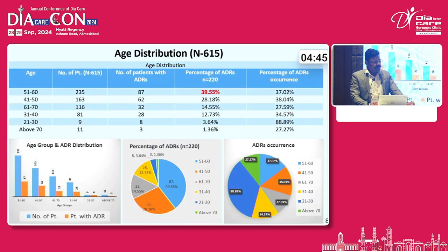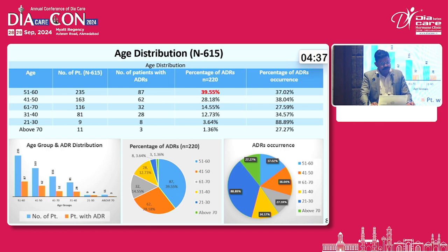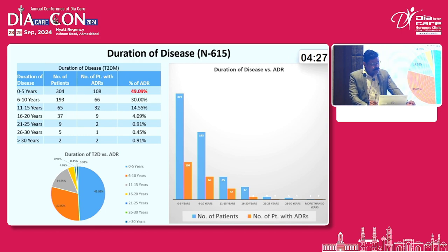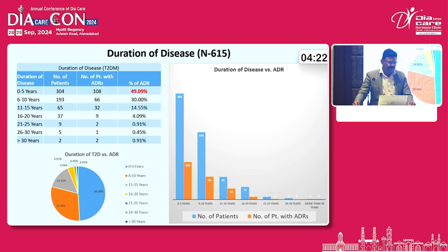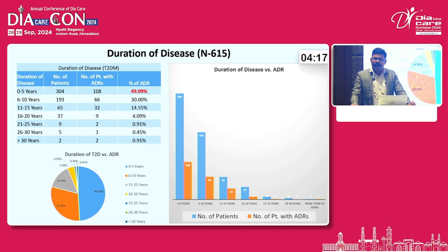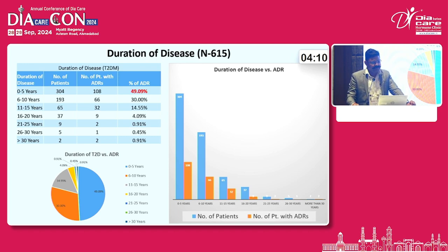With respect to age distribution, the most ADRs occurred in the subgroup of 51 to 60 years of age, with a percentage of ADR occurrence of 37.02%, followed by the subgroups 41 to 50 and 61 to 70. Regarding duration of disease, recently diagnosed T2DM patients (0 to 5 years) numbered 304, of which 108 patients were identified with at least one ADR — that is approximately 49% of ADR in that subgroup.